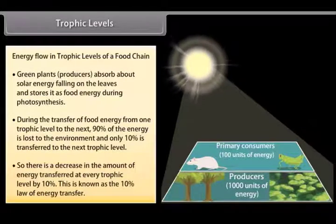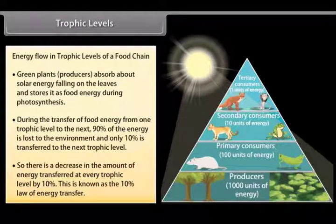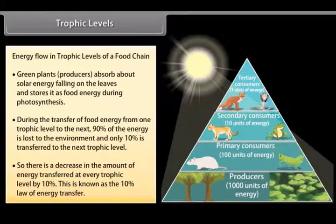So, there is a decrease in the amount of food energy transferred at every trophic level by 10%. This is known as the 10% law of energy transfer.